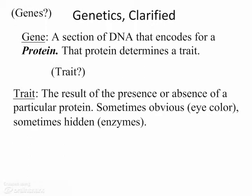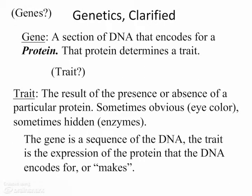But most genes actually code for things that we never really think about or see — things like receptor molecules, antibodies, and enzymes — all kinds of stuff we don't really think about. So the gene is a sequence of DNA, and the trait is the expression of the protein that the DNA actually encodes for.